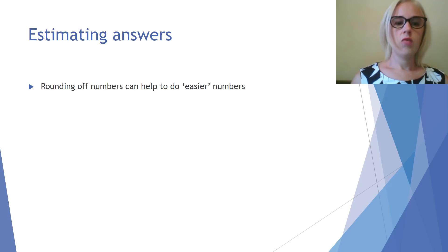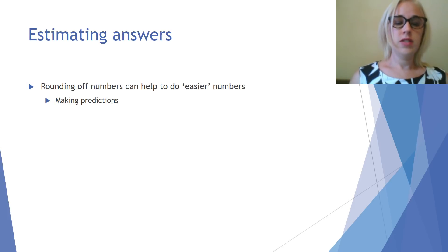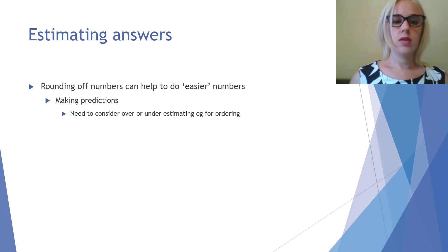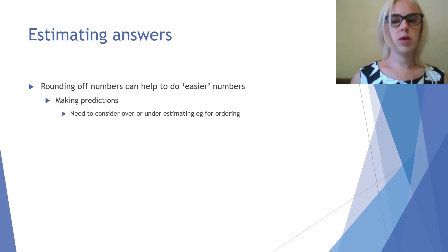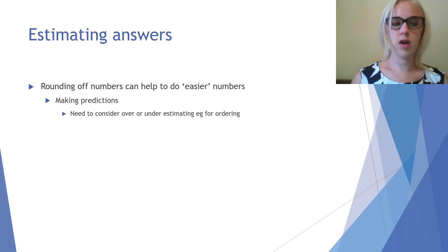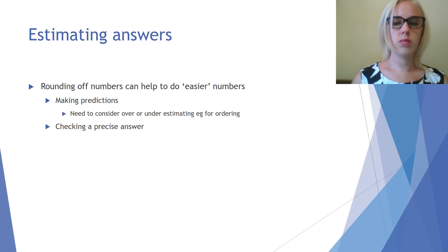Estimating answers. Rounding off numbers can sometimes help us to work with much easier numbers. This can help us when making predictions, and sometimes you'll need to consider over- or underestimating depending on circumstances. Going back to our pizza analogy, we would want to overestimate the number of pizzas to order, because underestimating would mean some people wouldn't get lunch. We can also use estimating to check a precise answer to see if it's close to what our estimated answer would be.